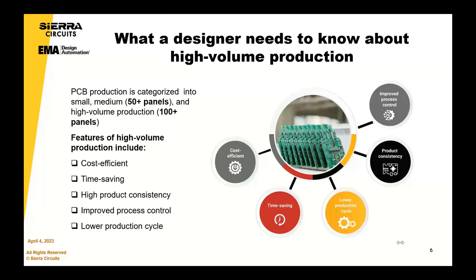Obviously that's not high production compared to, for example, the automotive industry, where they may be producing hundreds of thousands of units per day. But in the high regulatory environment with aerospace, defence, and other sectors which we support, this is what we're terming small, medium, and large volume production for today's webinar. The features and benefits we get from high volume production include cost efficiencies and economies of scale, time-saving by taking prototypes seamlessly through to mass production, and helping the customer get their product to market quicker.